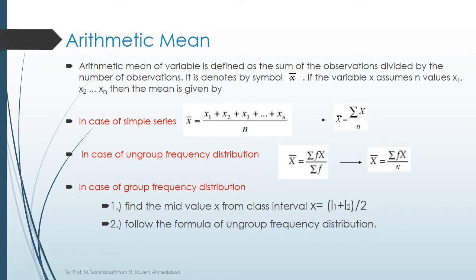From the classes, you have to find a mid value, which is denoted as x. The formula to find the x value, which is the lower boundary plus upper boundary divided by 2. The lower boundary denote as L1 and the upper boundary denotes as L2.